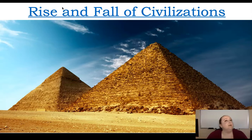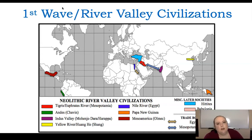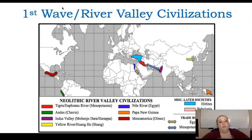Now we're talking about the rise and fall of civilizations. There are six things we really need to concentrate on. The first wave is known as the river valley civilizations — they start around the river valleys: the Nile River, the Tigris and Euphrates, the Yellow River, the Indus, and Mesoamerica. Typically we would have talked about this if we'd gone over 10,000 years of history.